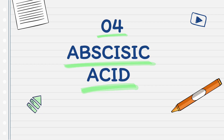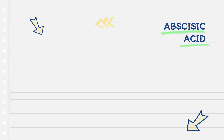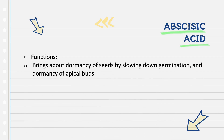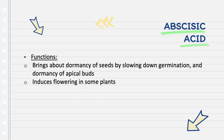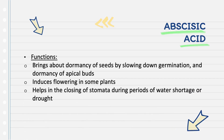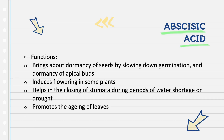Lastly, let us discuss abscisic acid. Its functions include bringing about dormancy of seeds by slowing down germination, and dormancy of apical buds. It induces flowering in some plants and helps in the closing of stomata during periods of water shortage or drought. It also promotes the aging of leaves.